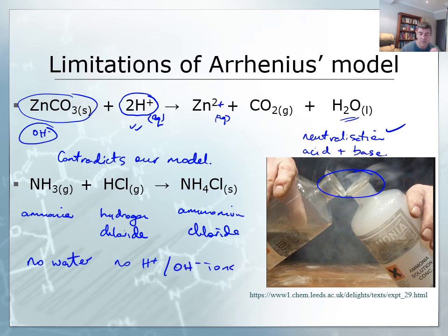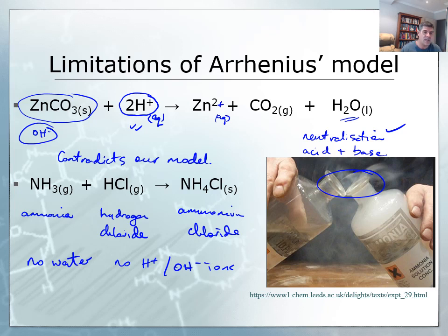So here are a couple of examples of chemical reactions: one which produces water as a neutralization reaction but doesn't have hydroxide ions obviously being produced, and another which doesn't even produce water at all. So what's going on? How do we classify these, and how does our model need to change in order to incorporate these types of examples?